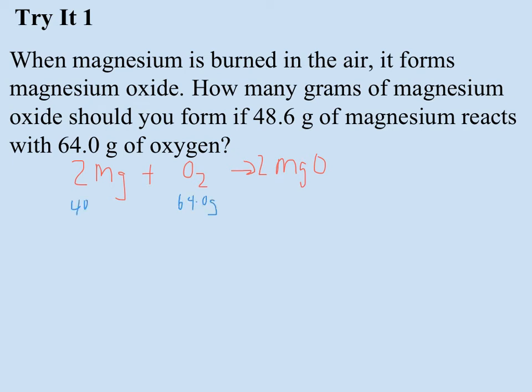So if I work with my magnesium first, 48.6 grams would be about 2 moles, because it's 24.31 grams per mole. So 48.6 divided by 24.31, 1.999. So I'm going to go ahead and round that to 2 moles of Mg.